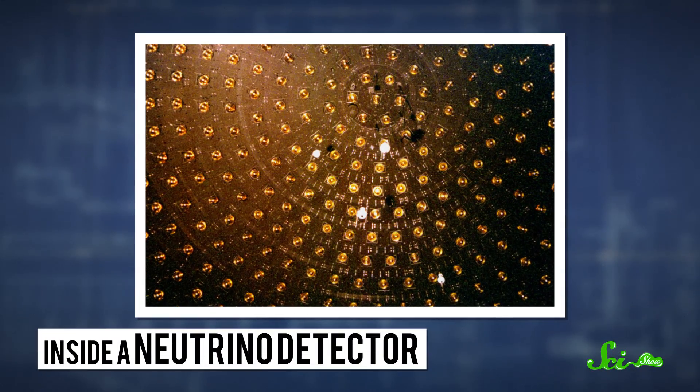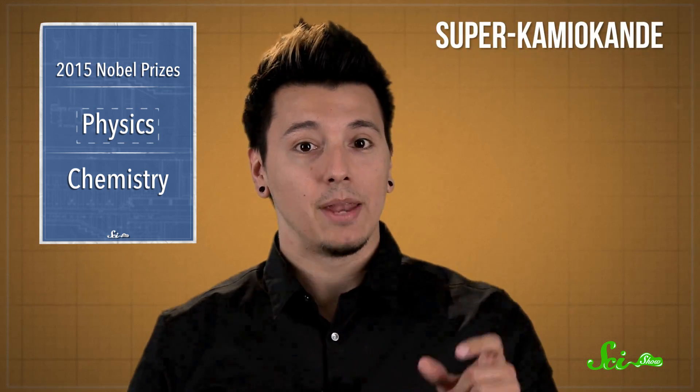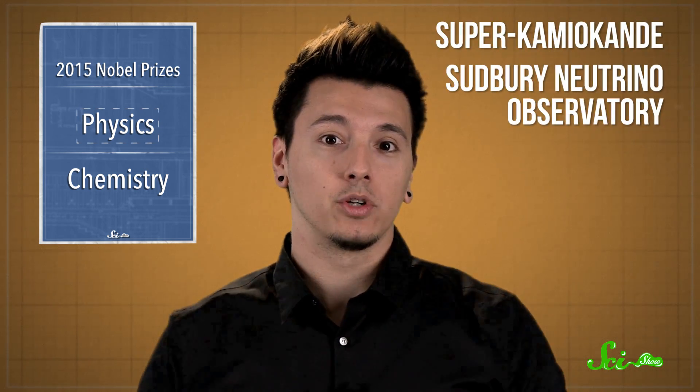Both scientists work in teams attached to a neutrino detector. Kajita works with the Super Cameo Kande detector in Japan, and McDonald works with the Sudbury Neutrino Observatory in Canada. Both detectors work in pretty much the same way, looking for tiny flashes that neutrinos make when they pass by protons and electrons in just the right way. For a long time, we thought the flavor of a neutrino was built-in and never changed.